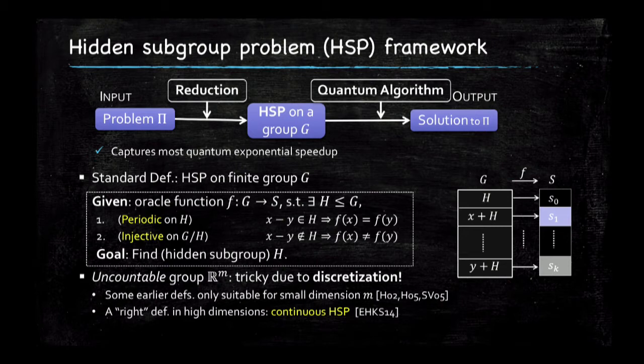In Eisenträger, Hallgren, Kitaev, and Song 2014, they got rid of that problem, but the previous state of the art was limited to cases where you discretize R^m for a fixed m.